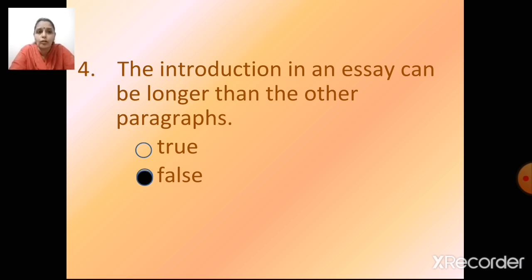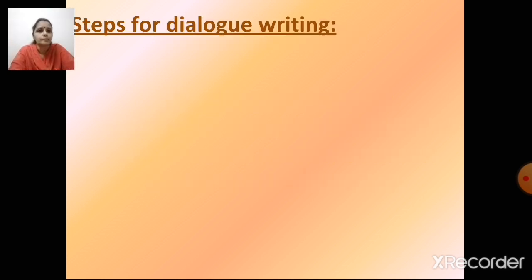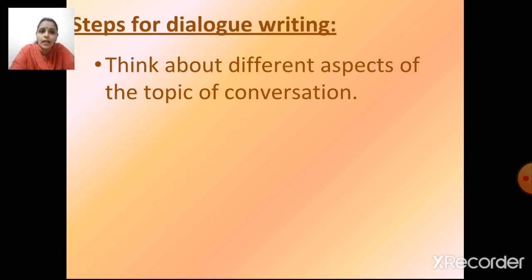Clear till here? All have understood what we are doing? In composition, we are going to have MCQ-based questions only. You have to read the statement, understand, and select the correct option by clicking on it. Now let's move ahead to the second topic — dialogue writing. What is a dialogue? A dialogue is a conversation or a set of words spoken between two or more characters. If there are two people or more talking among themselves, that is a dialogue. Now what are the steps to keep in mind while writing a dialogue? Think about different aspects of the topic of conversation.